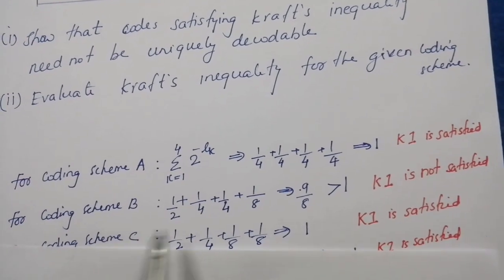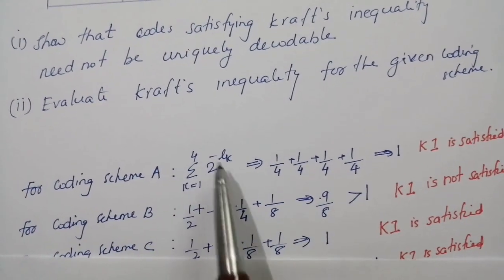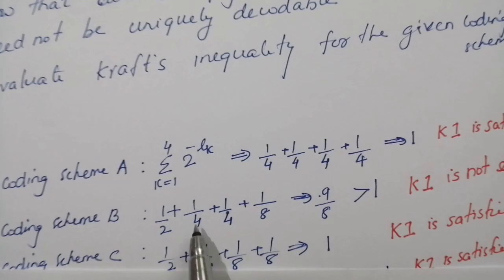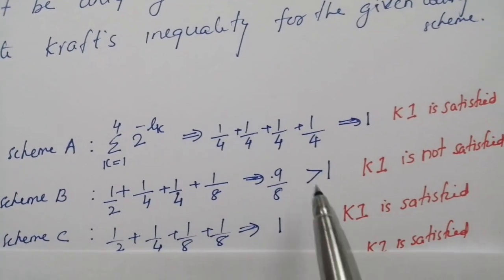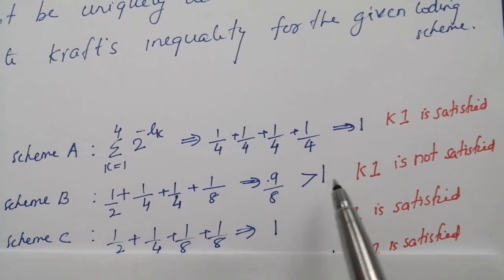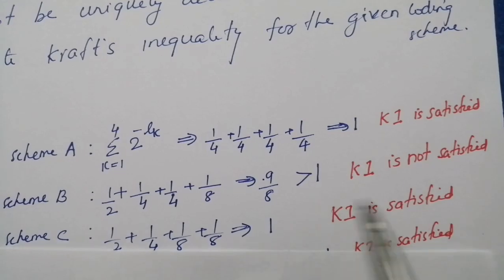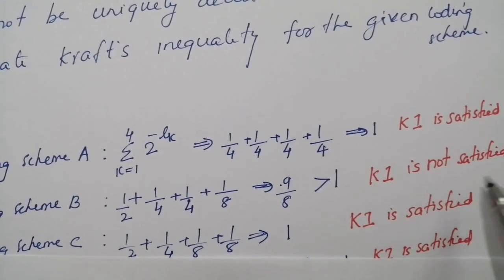For coding scheme B, sigma K equals 1 to 4, 2 raised to minus LK, that is 1/2 plus 1/4 plus 1/4 plus 1/8, that is 9/8 and it is greater than 1. So we can see that Kraft's inequality is not satisfied.